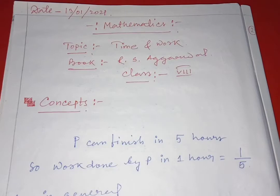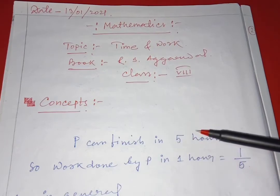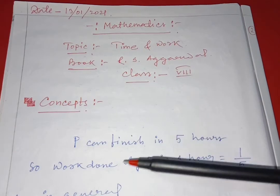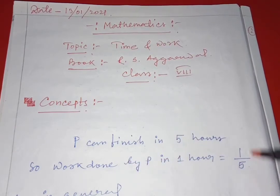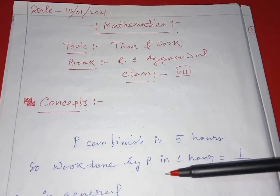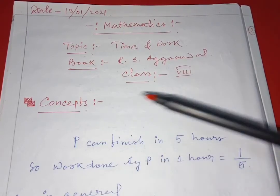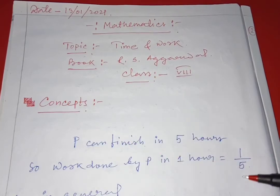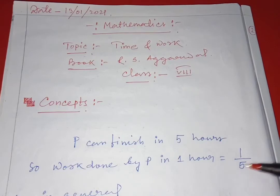So what is the main concept behind it? Suppose we can finish a work in five hours — a work is to be done by P in five hours. So work done by P in one hour equals one by five. That means P can complete one-fifth of this work. The numerator will go to the denominator. This is the concept.